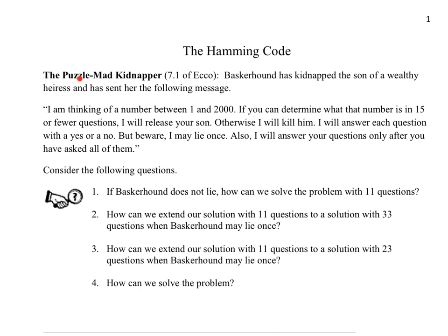It's called the Puzzle-Mad Kidnapper Problem. Baskerhound has kidnapped the son of a wealthy person and has sent the following message: 'I am thinking of a number between 1 and 2000. If you can determine what number I'm thinking of in 15 or fewer questions, I will release your son. Otherwise, I will kill him.'